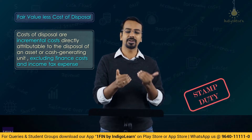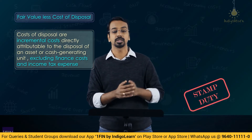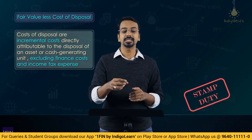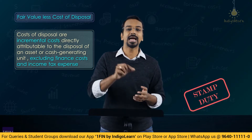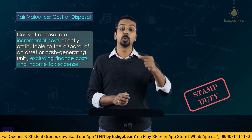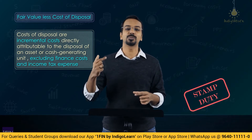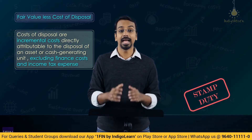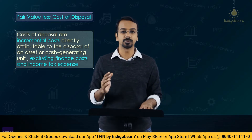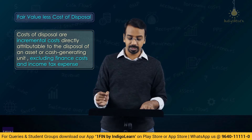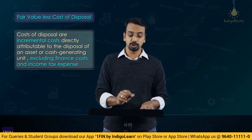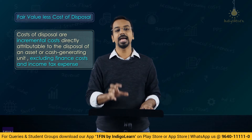Generally the buyer pays stamp duty, but say the seller has agreed to bear that cost. The stamp duty would not have been incurred had you not sold this particular property. So you will include those costs being incurred because you are disposing of the property. You will exclude income taxes and finance costs from cost of disposal. Cost of disposals are incremental costs directly attributable to the disposal of an asset or CGU, except finance cost and income tax.